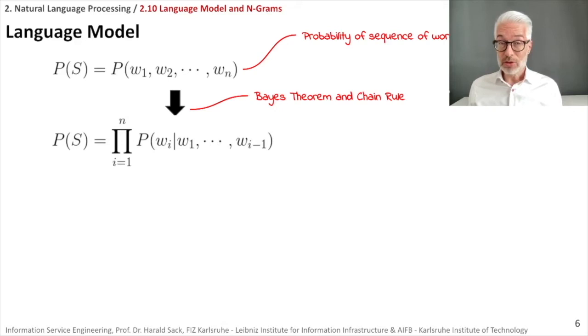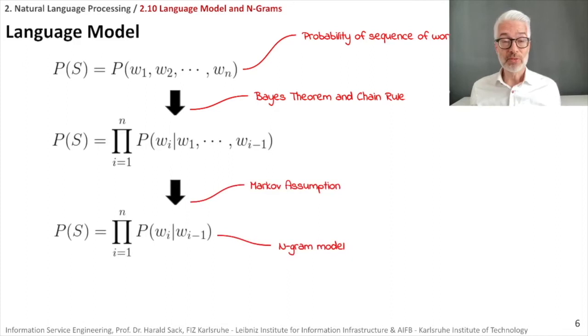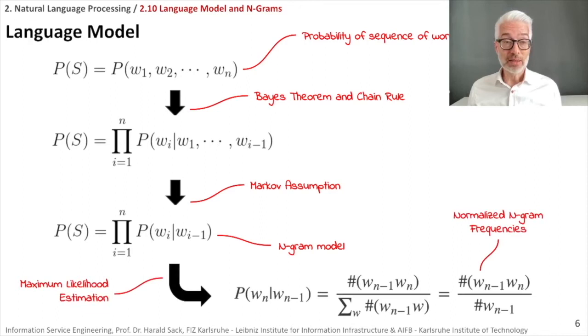We also saw that we do not necessarily need the complete history. With the help of the Markov assumption we only look at a few preceding words, which then leads us to the n-gram model. We need to compute the probability of the occurrence of these words based on empirical evidence. This could be done based on the maximum likelihood estimation method applied to huge text corpora. By that we could simply reduce the problem to counting the occurrence of single words, bigrams, trigrams and so on, and look at the normalized n-gram frequencies for the probabilities.